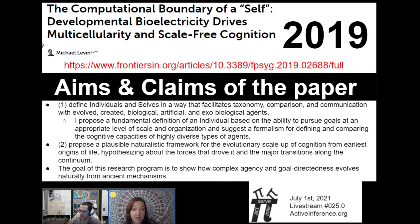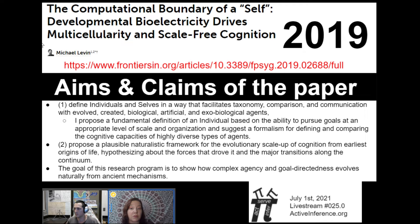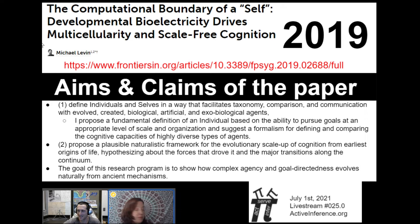First, they define individuals themselves in a way that facilitates taxonomy, comparison and communication with evolved, created biological, artificial and exobiological agents. He proposes a fundamental definition of an individual based on the ability to pursue goals at an appropriate level of scale and organization, and suggests a formalism for defining and comparing the cognitive capacities of highly diverse types of agents. Second, he proposes a plausible naturalistic framework for the evolutionary scale-up of cognition from the earliest origins of life, hypothesizing about the forces that drove it and the major transitions along the continuum. The goal is to show how complex agency and goal-directedness evolves naturally from ancient mechanisms. So, Daniel, what do you think about that?